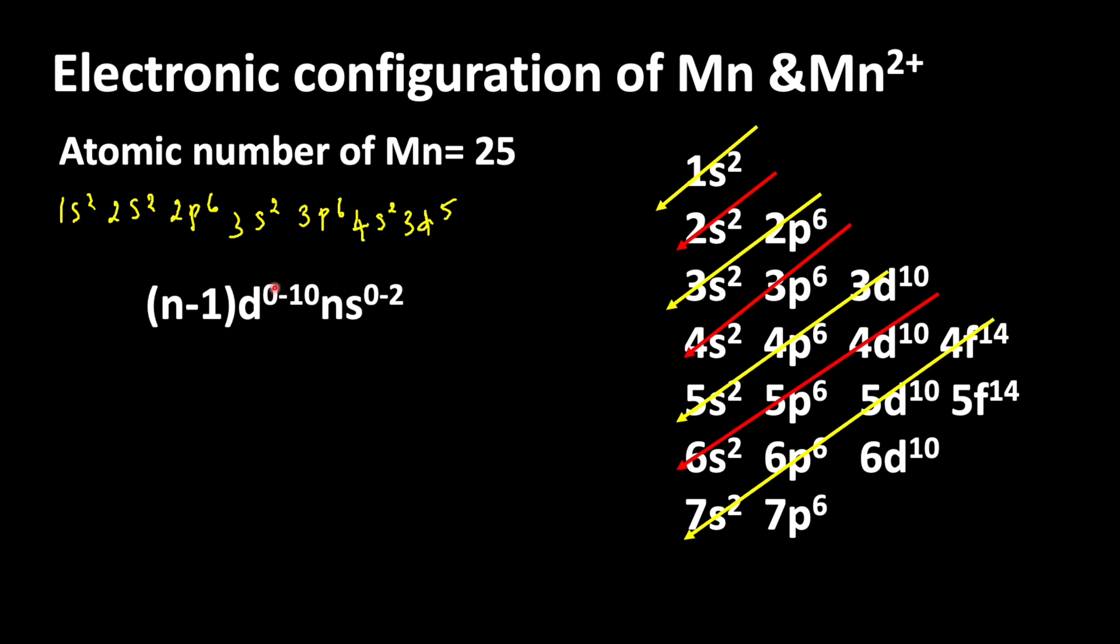But if you look at this, this is the general electronic configuration of d-block elements. That means while writing the electronic configuration, first we are writing the inner d electrons, then after that we are writing the 4s orbital electrons. So now we can change this electronic configuration. We can write 3d5, then after that 4s2.